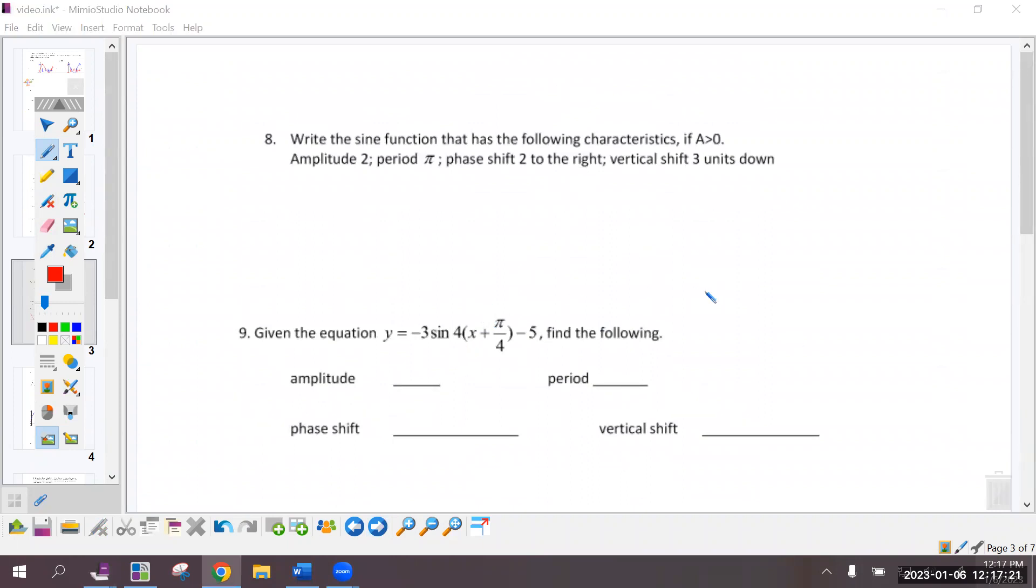So specifically reading number 8, write a sine function, an amplitude of 2. The B value is going to be 2 pi over the period, that's 2. 2 to the right is minus, that's a lot of 2's, is minus 2, and then down 3 is minus 3.